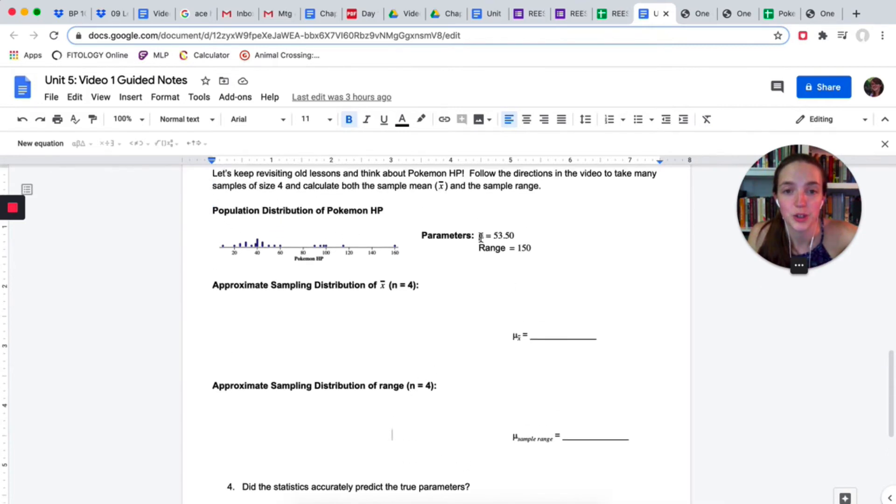So you're doing that for the sample means and for the sample ranges. Once you have those drawn and the means noted, you can answer number four. Now notice I did include the true mean, the parameter, this is the true mean HP for all Pokémon, and the true range for all Pokémon. So just to recap, add six or seven data points to the spreadsheet, copy-paste the sample means into Staplet, sketch, and jot down the mean, copy-paste the sample ranges into Staplet, sketch, jot down the mean, and then answer number four.